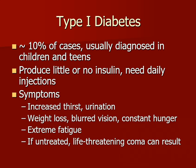Type one diabetes accounts for about 10% of cases. It's usually diagnosed in children and teens because it's typically something you're born with. With type one, you produce little or no insulin and therefore need a daily injection of insulin. Symptoms can include increased thirst, increased urination, weight loss, blurred vision, constant hunger, and extreme fatigue. If untreated, a life-threatening coma can result. Many type one diabetics carry insulin or an injection with them in case of a life-threatening situation, and sometimes sugar — like a candy bar — can also help.